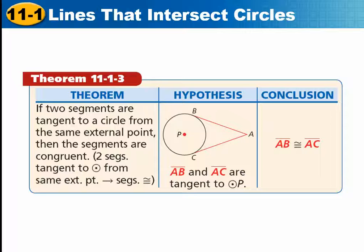Here's another theorem. If two segments are tangent to a circle from the same external point, in this case A, so then what it means is that AB and AC are both tangent to circle P. That means that AB has to be congruent to AC. So if they have the same external point and they're both tangent to the circle, then these two segments will be congruent. And you can use that to find missing parts of the figure, or you can solve for A.